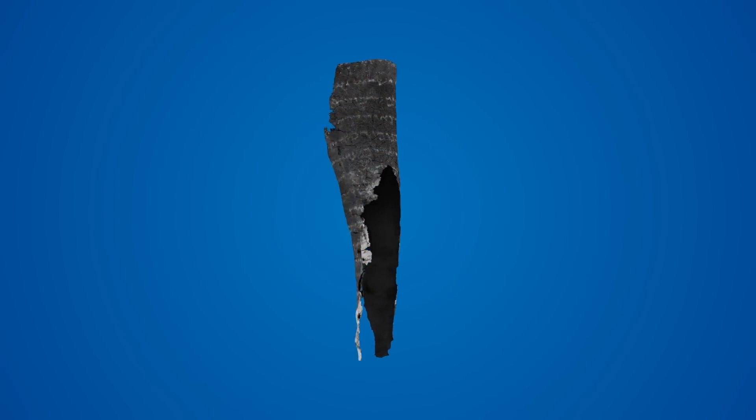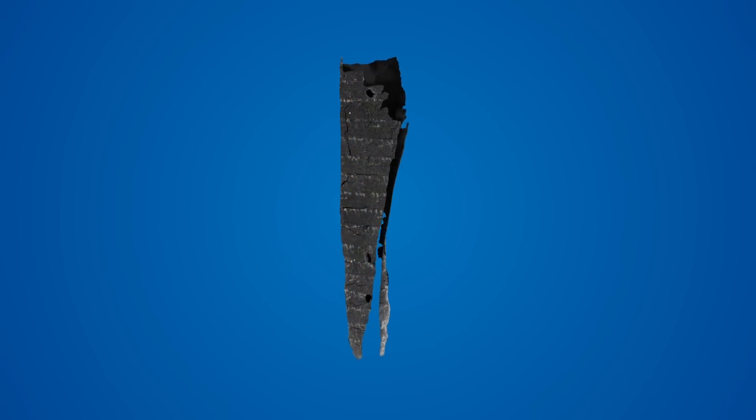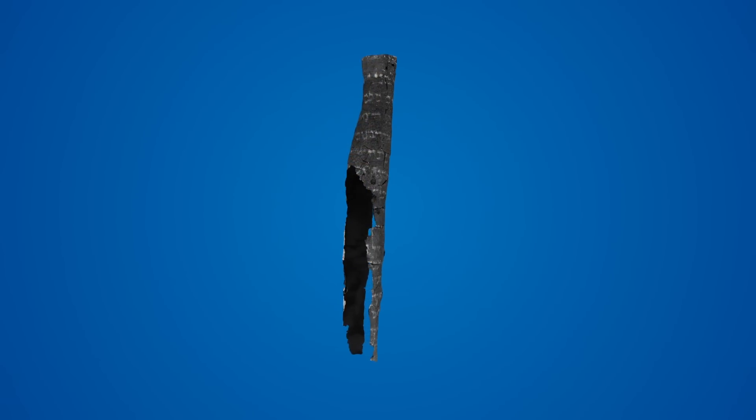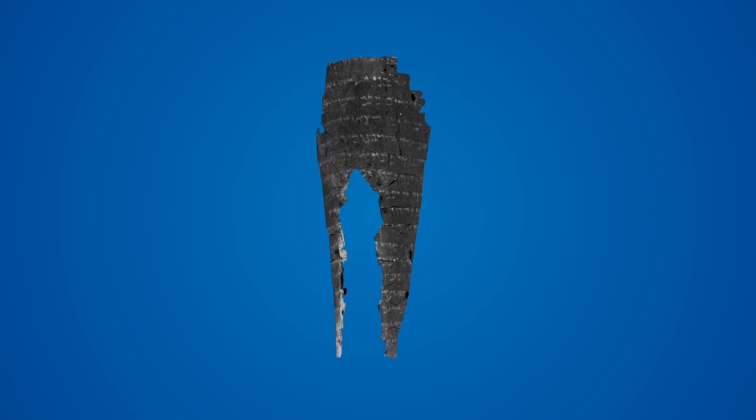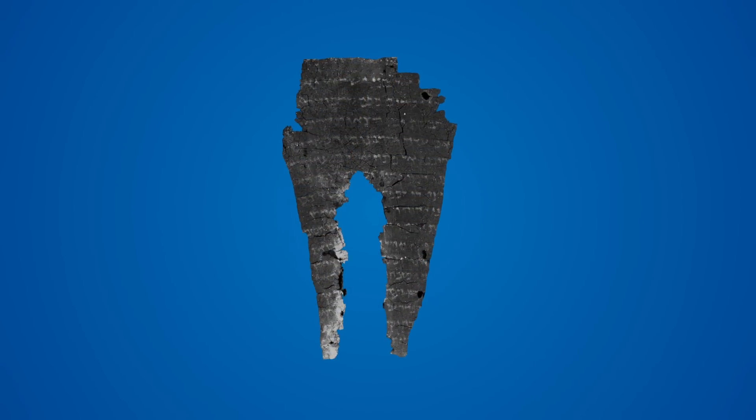However, because the surface is curved, it's difficult to read all of the text from one viewpoint. The flattening stage of our pipeline converts this textured 3D surface into a flat plane so that the text can be more easily read. To produce the best results, these three steps must be performed on one small section of the scroll at a time.